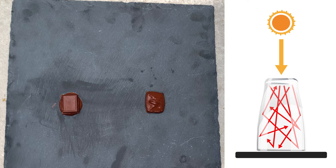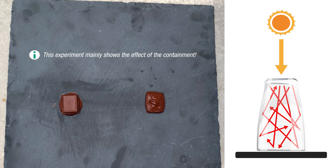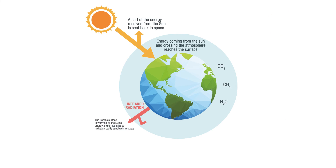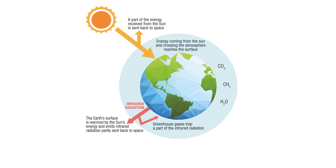Even if the analogy may look accurate — indeed, carbon dioxide is called a greenhouse gas — actually, we mainly observe the effect of containment in this experiment, and not the greenhouse effect. There are gases in the atmosphere that play the same role as a glass, and are therefore called greenhouse gases. What you have to keep in mind, though, is that this experiment is only to be used as an analogy. The greenhouse effect occurs when infrared radiation is trapped by gases.